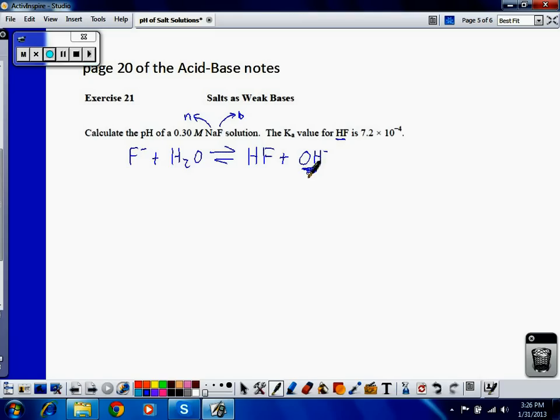The hydrolysis reaction I have to write for this is F minus plus H2O yields HF plus OH minus. Since this is OH minus, this expression has a Kb. And the Kb for this is equal to the concentration of HF times the concentration of OH minus divided by the concentration of F minus.